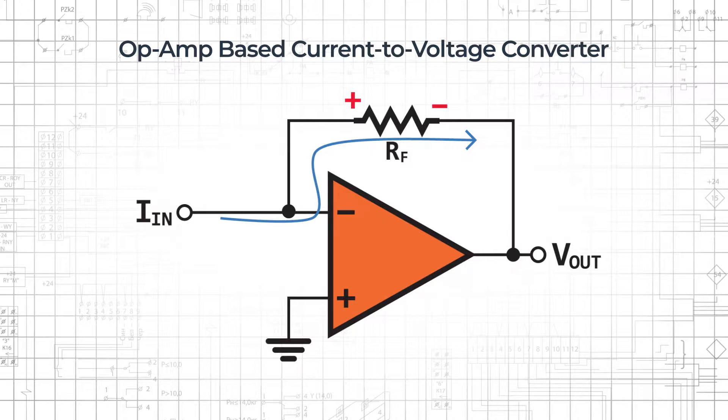This means that one side of the feedback resistor is at virtual ground, and the other side is connected to Vout, and all input current flows through the feedback resistor.